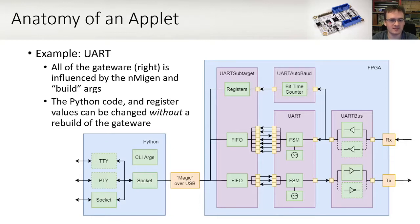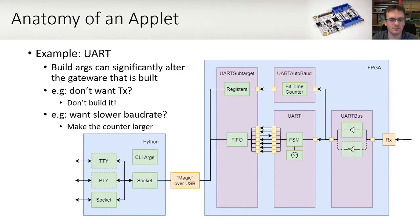For example, if you're working on a Socket, then you can do that with no problems. Registers can be changed without a rebuild as well, and they are accessible from Python at runtime. For example, a change in baud rate will not require a rebuild. Build arguments can significantly alter the gateway. If you don't want transmit capabilities, then don't build them — remove those transmit components. Alternatively, if you want to use a baud rate below 9600 baud, then it's simple to rebuild with a wider counter that can facilitate those longer bit times.